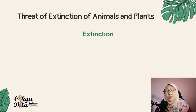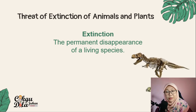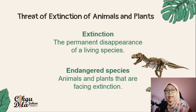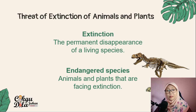So what is extinction? Extinction is the permanent disappearance of a living species. We also have endangered species. Endangered species are animals and plants that are facing extinction — their numbers are reducing year by year.